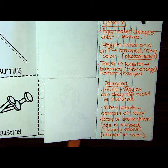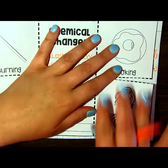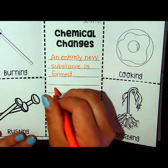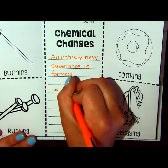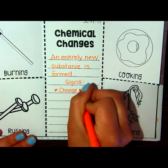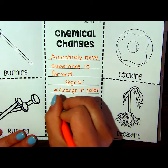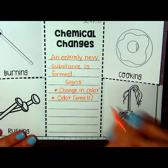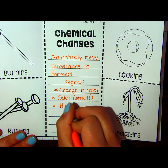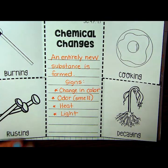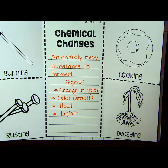Just to recap: we know that an entirely new substance is formed, and we've given some really specific examples. Some signs of a chemical change are a change in color and odor — which is a smell that is produced. Sometimes they also produce heat or light. That wraps up video two with examples of chemical changes.